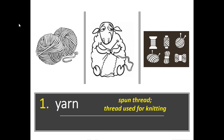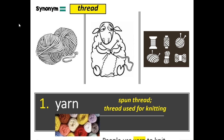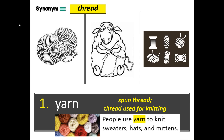What is yarn? Yarn is spun thread used for knitting. A synonym for yarn is thread. People use yarn to knit sweaters, hats, and mittens — you could also say people use thread to knit sweaters, hats, and mittens. Think about it: what is yarn used for other than clothing? You could also say what is thread used for other than clothing? Make sure you have yarn, and a synonym could be thread in your second column.